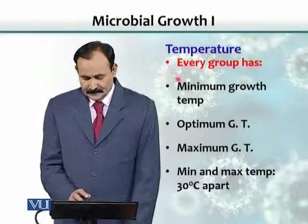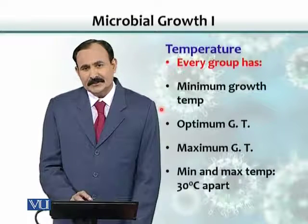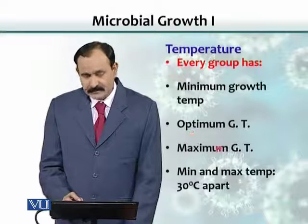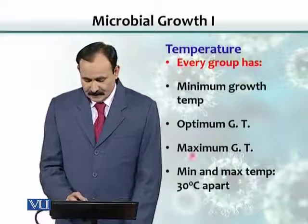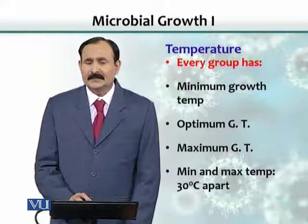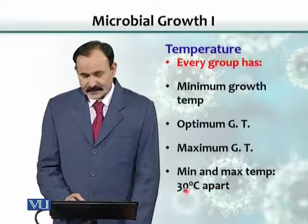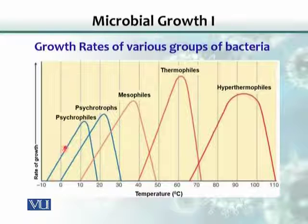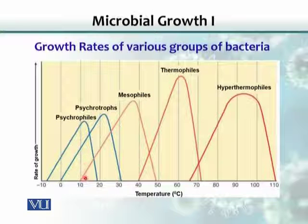Every group has a minimum, optimum, and maximum growth temperature. The range between minimum and maximum growth temperature is roughly about 30 degrees Celsius. As you can see from the graph, growth starts increasing as temperature rises until it reaches the optimum, then decreases. For psychrophiles, the optimum temperature is about 15 degrees Celsius.